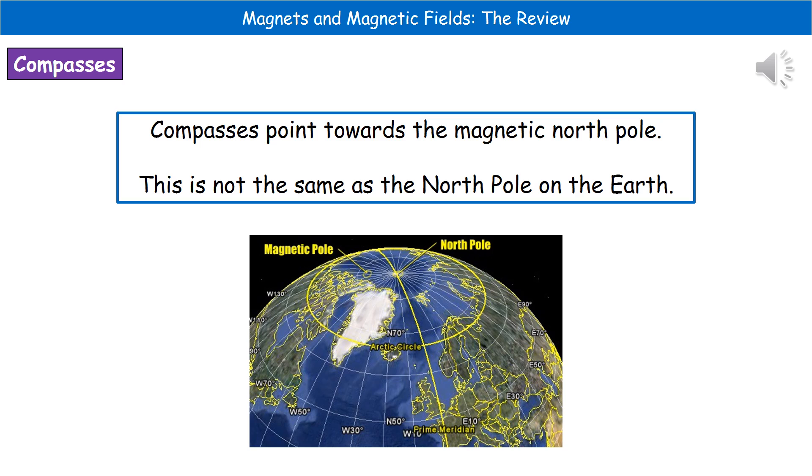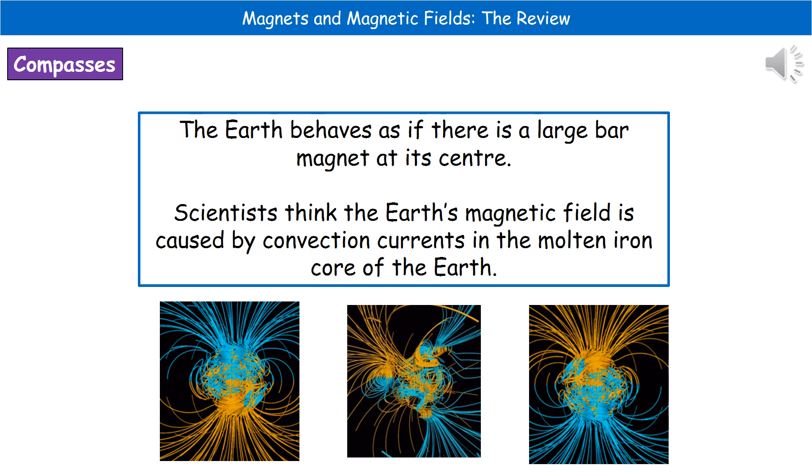So one of the oldest uses that we as humans have got for magnetism is in compasses for navigation. So what we know is that if you've got a compass, then it's going to point towards the magnetic north pole. But one point that you need to remember is that the magnetic north pole is not the same as the Earth's north pole. And I've given you a little picture of the Earth there to show you the difference. So the north pole itself of the Earth is at the very top there, which is basically that point at which the Earth is going to rotate around its axis. Whereas the magnetic north pole is just off to the left of that in a slightly different location. So just remember, magnetic north pole and the Earth's north pole are actually different locations on our planet.